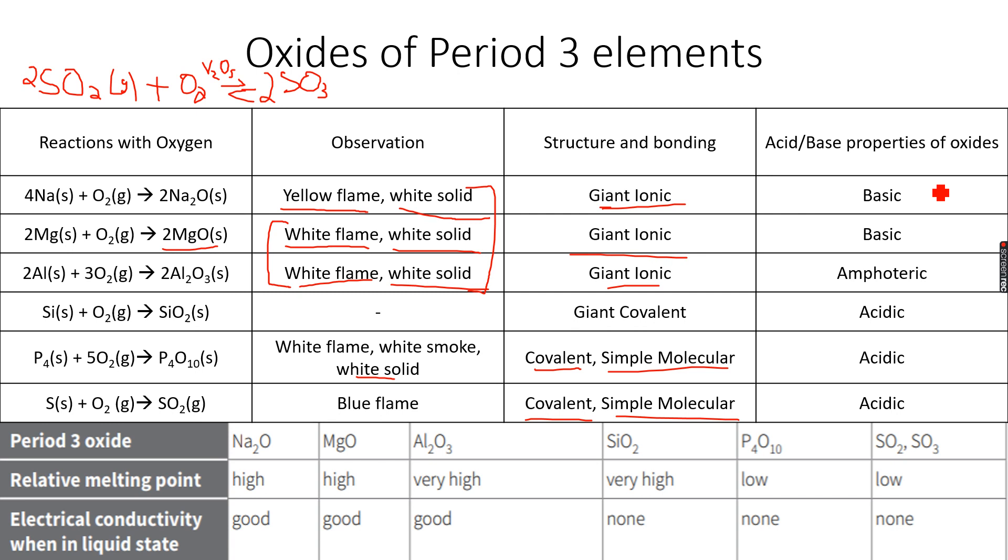Now let's talk about the acid-base properties of these compounds. Sodium oxide Na2O is basic in nature. Magnesium oxide is also basic in nature. Aluminum oxide is amphoteric, which means it can react as an acid as well as a base.